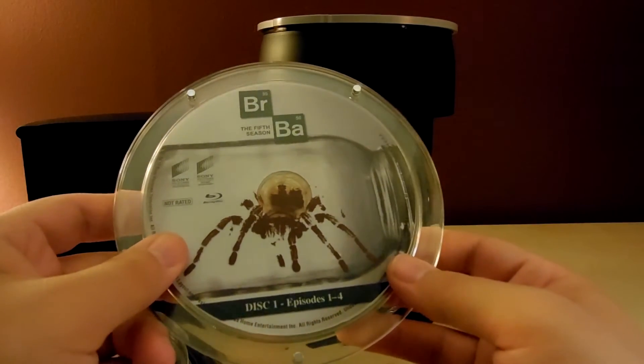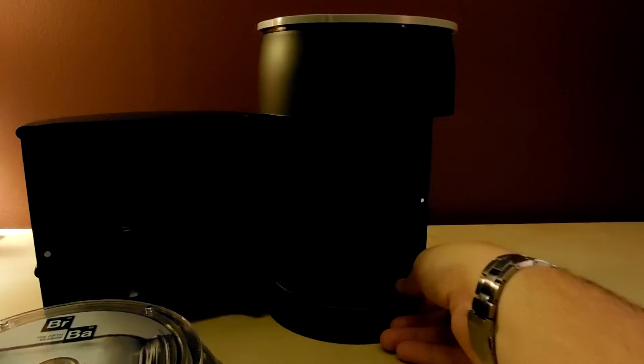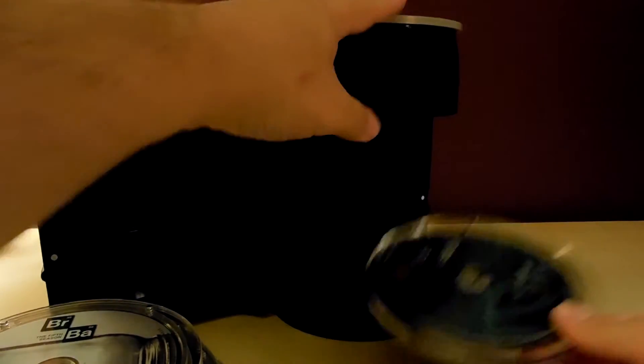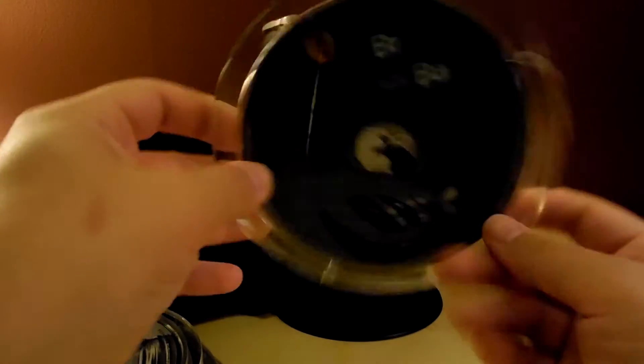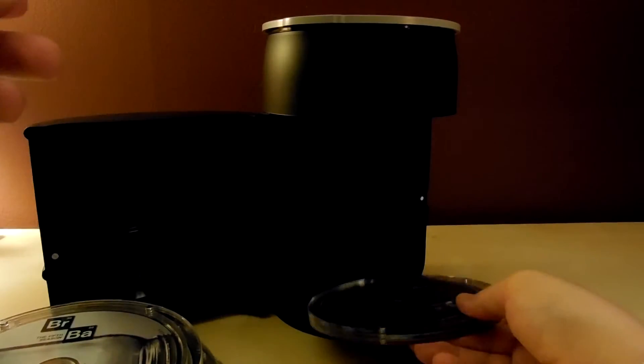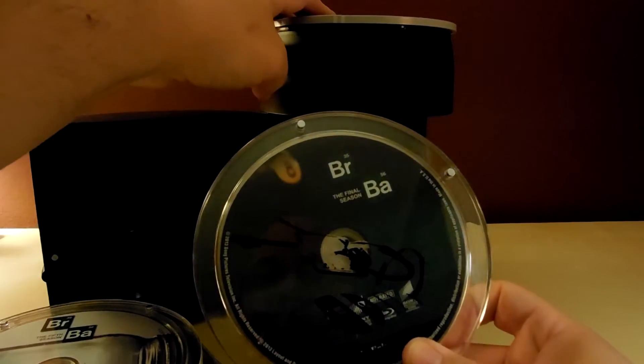Season five, you'll see the fifth season. The fifth season has the tarantula in the jar. And then the final season has the picture of the car keys, which of course you'll see what that means later. And like I said, it's just got a single background. I guess that's it actually.